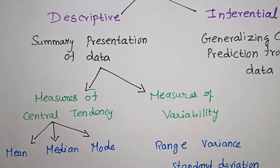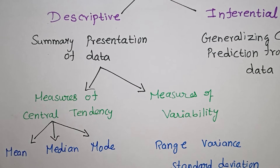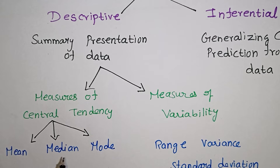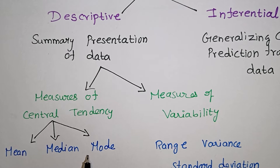The median is found by arranging the data in order and identifying the middle number. The mode is the value that is most frequently repeated.